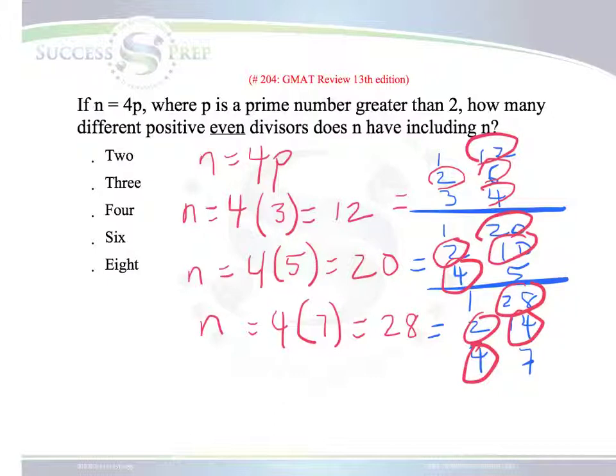Well, what we notice here then is in looking at 12, 20, and 28, in each case, we have 1, 2, 3, 4 positive even divisors. Same thing here: 1, 2, 3, 4 positive even divisors. And 1, 2, 3, 4 positive even divisors. So, this tells us that the answer will be 4. It means in every case where you have a prime number greater than 2 and you multiply by 4, the positive even divisors you have, there are always going to be 4 of them.